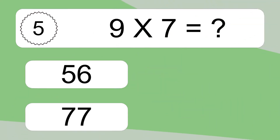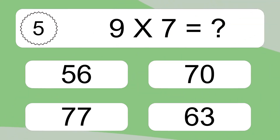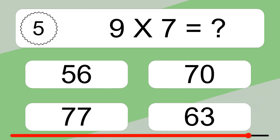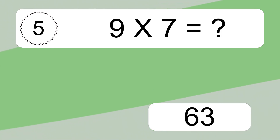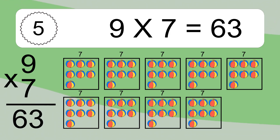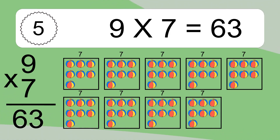9 times 7 equals what? 9 times 7 equals 63. We have 9 boxes, and each box has 7 colorful balls inside. If you count all the balls in all the boxes together, you will have 9 times 7 balls. This equals 63 balls.